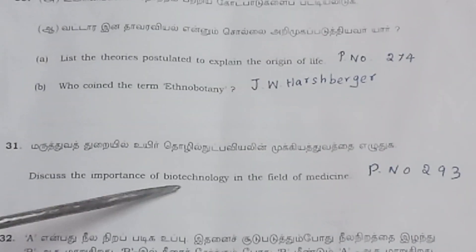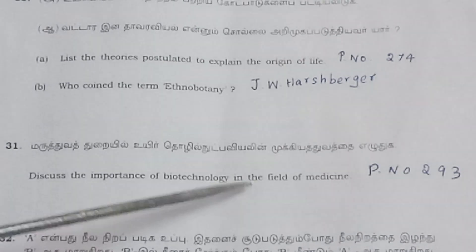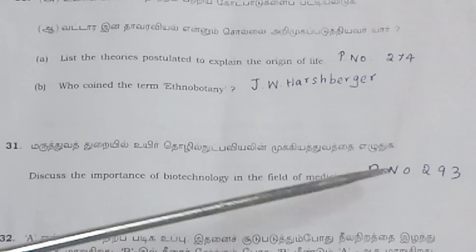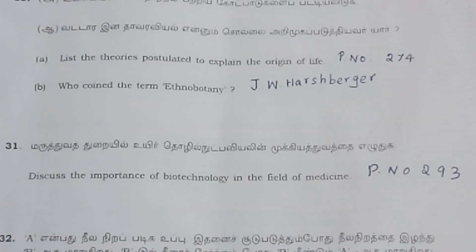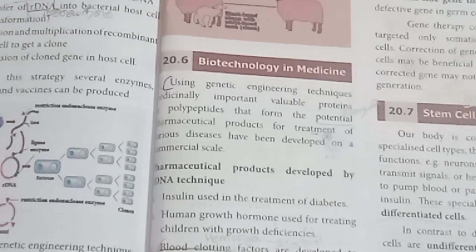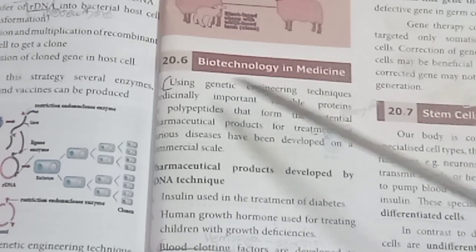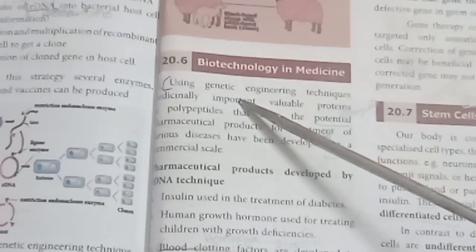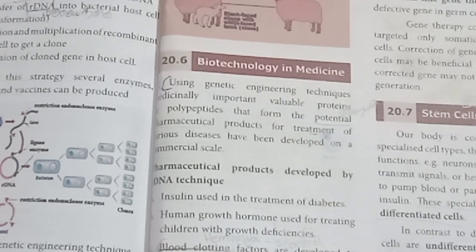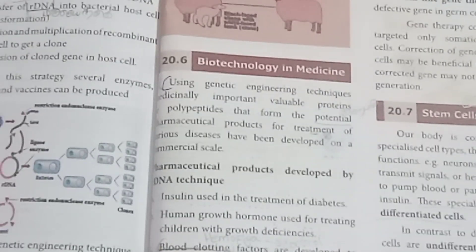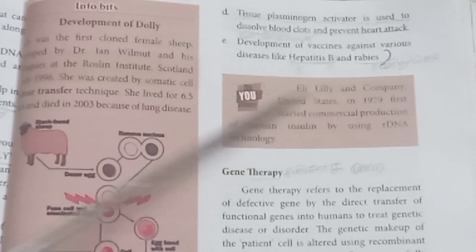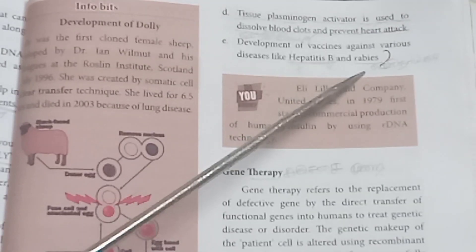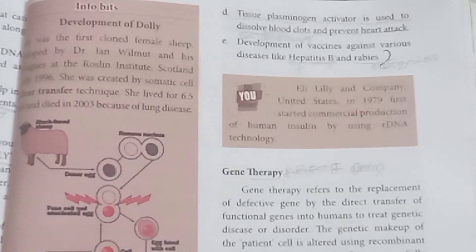Question 31: Discuss the importance of biotechnology in the field of medicine. Refer to page number 293. Using genetic engineering techniques, vaccines have been developed against various diseases like hepatitis B and rabies.